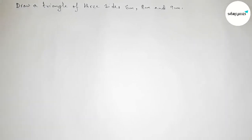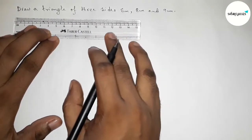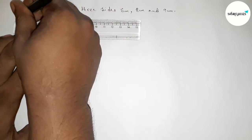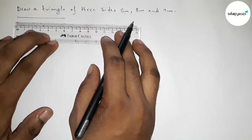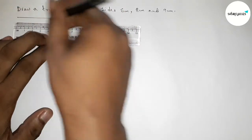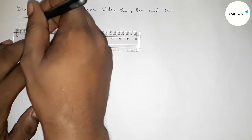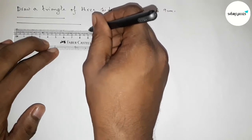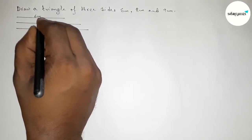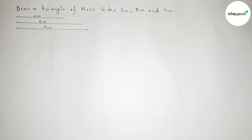First of all, we have the given three sides. The length of the first side is six centimeter, the second side is eight centimeter, and the last line is nine centimeter. So this one is six centimeter, this one is eight centimeter, and this one is nine centimeter.